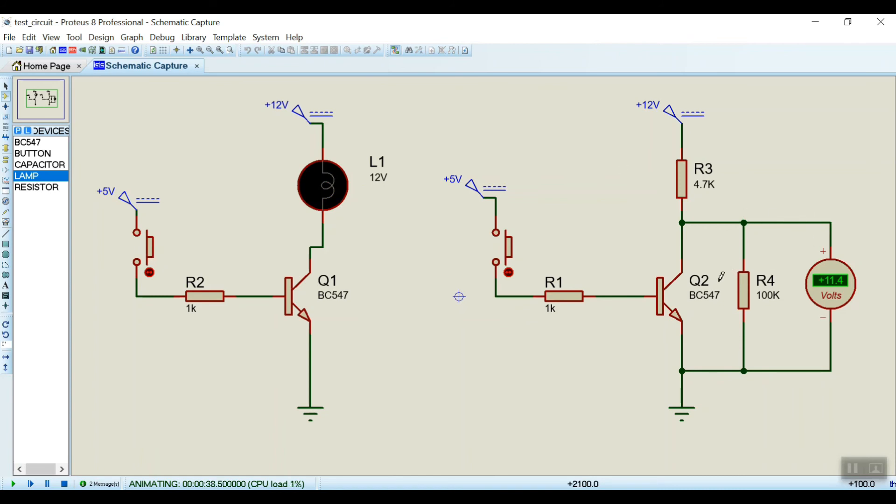But in the right hand side circuit, look at here we are getting the full voltage. That means transistor is in cutoff mode. Why? Because I have not pressed the switch and transistor is not conducting at all. That's why we are almost getting 12 volt. So now if I press this button, look at the voltage, it is zero.